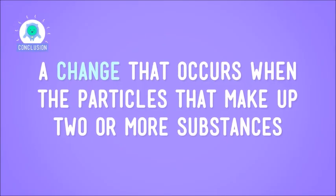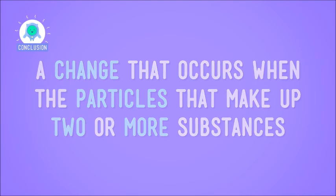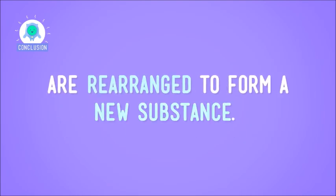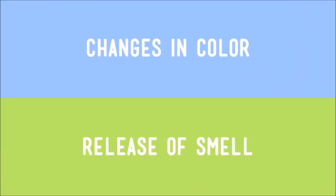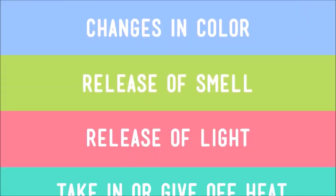A chemical change is a change that occurs when the particles that make up two or more substances are rearranged to form a new substance. Most of the time, chemical changes can't be undone, and we can tell they're occurring by observing them and noting things like changes in color, release of smell or light, and whether they take in or give off heat. All in all, I'd say that sniffing out chemical changes can be a piece of cake.